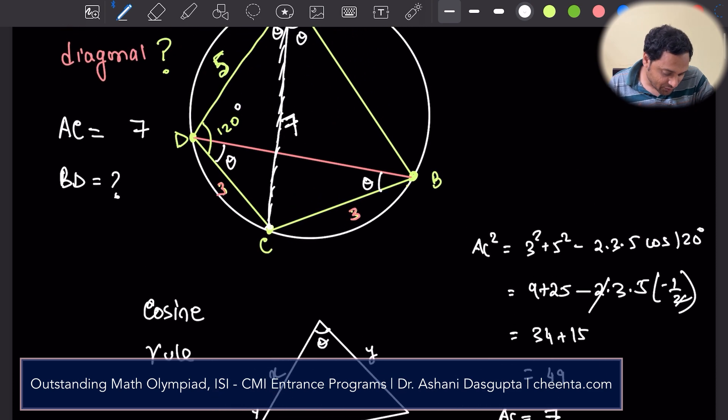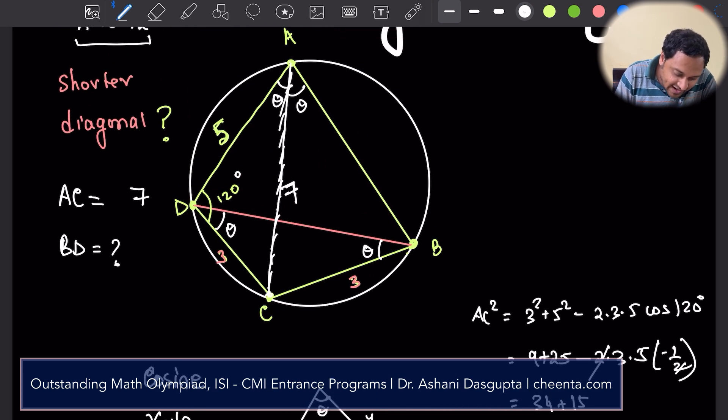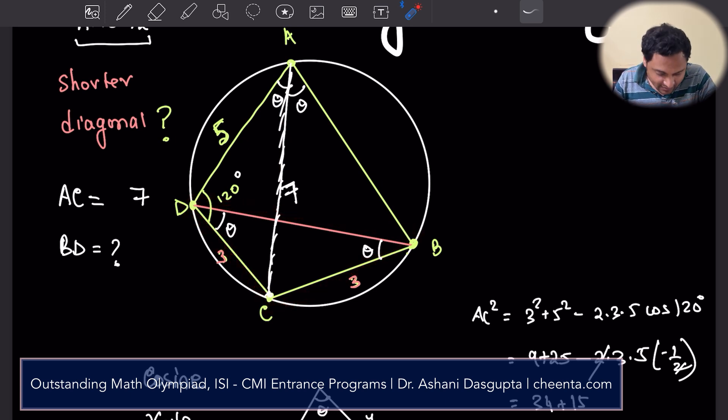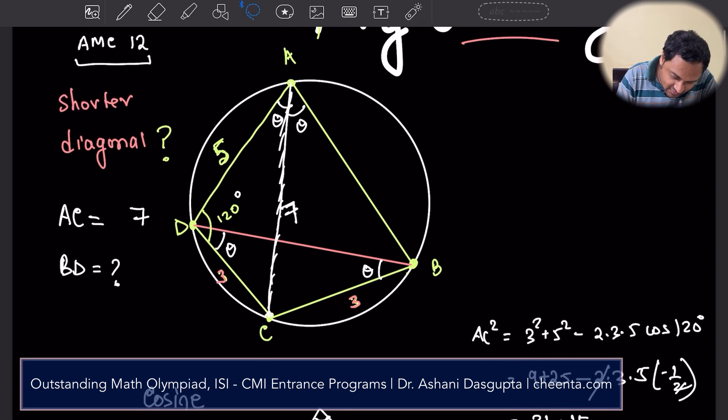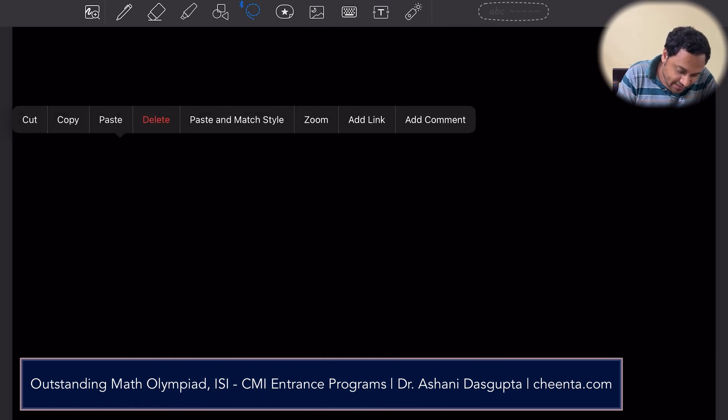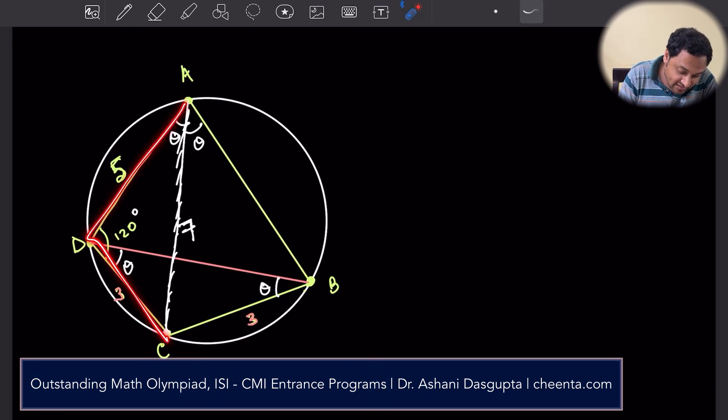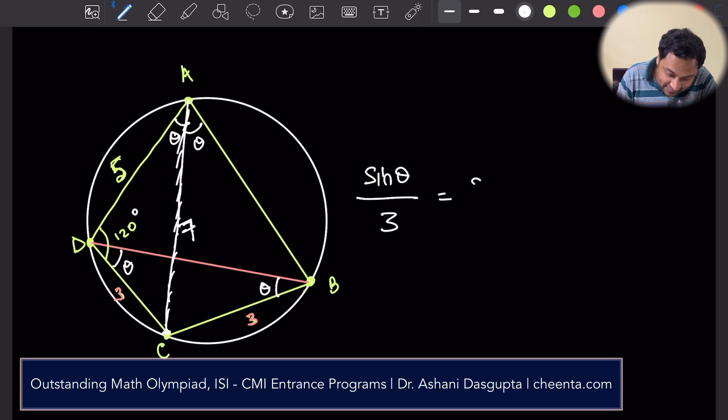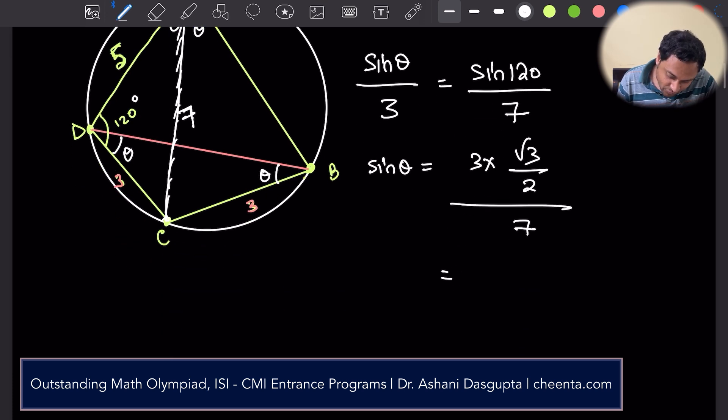So let's use the sine rule here and we will do it in a clever way. So if we apply the sine rule here and if we apply the sine rule here, we will get the final answer. Let's see how. So I'll just copy this picture. And I will put it here to remove the clutter. So now let's use it in the bigger triangle. I'm interested in sine of theta. So what is sine theta by 3? I'm just using sine rule in this triangle. Sine theta by 3 is equal to sine of 120 by 7. So we know sine theta now. So what is sine theta? Sine theta is three times sine of 120 is root 3 by 2 by 7. So this is 3 root 3 by 14.